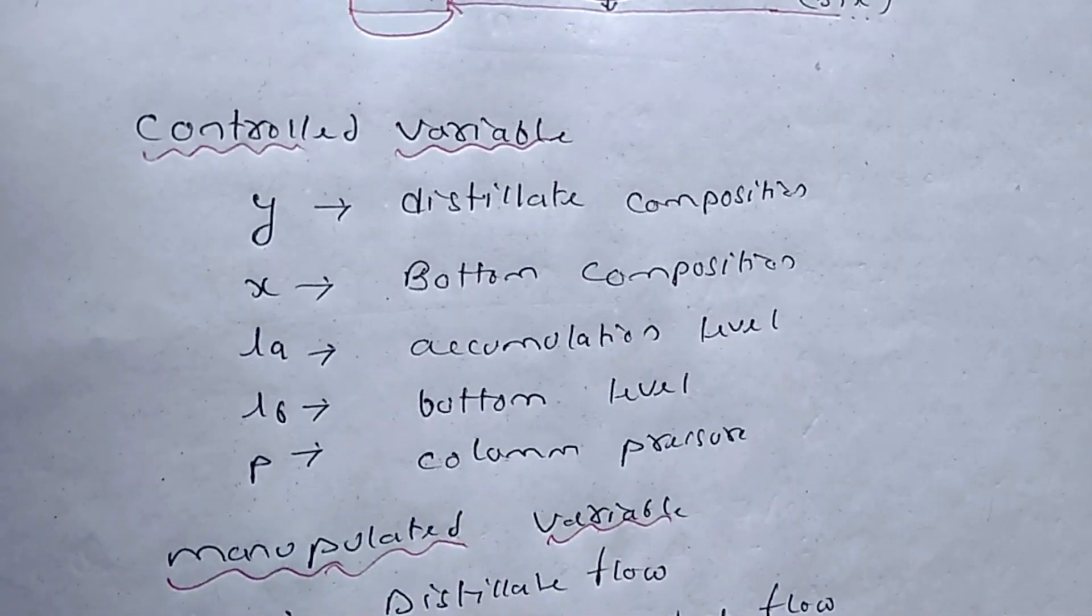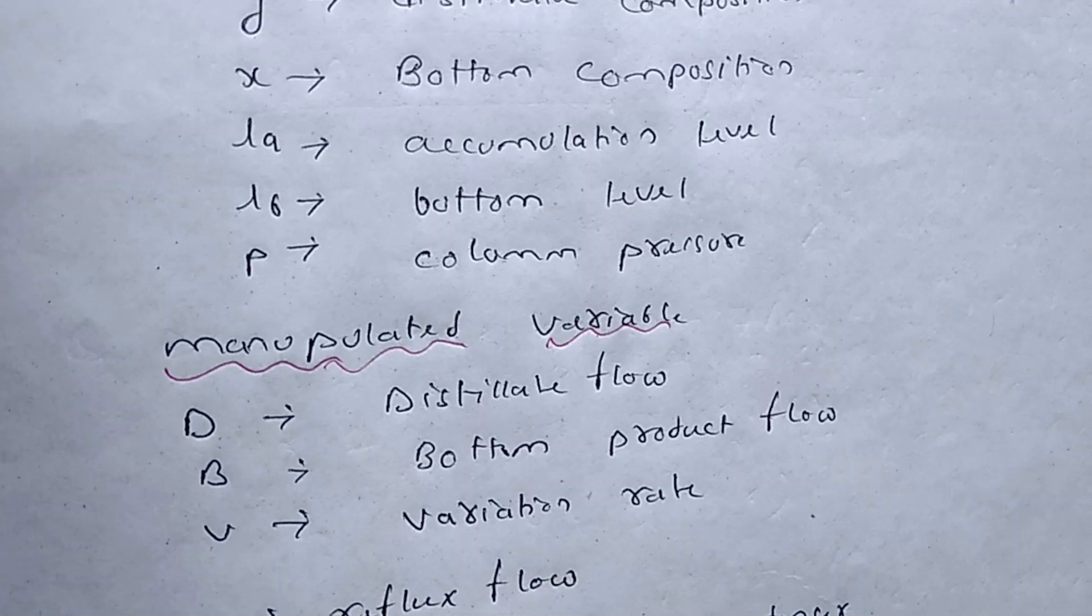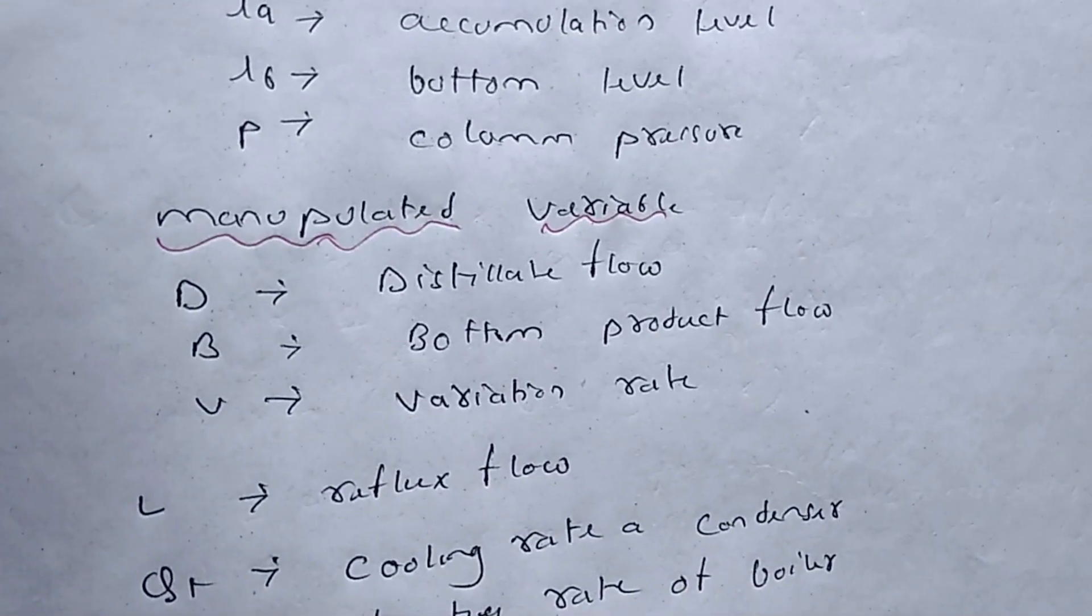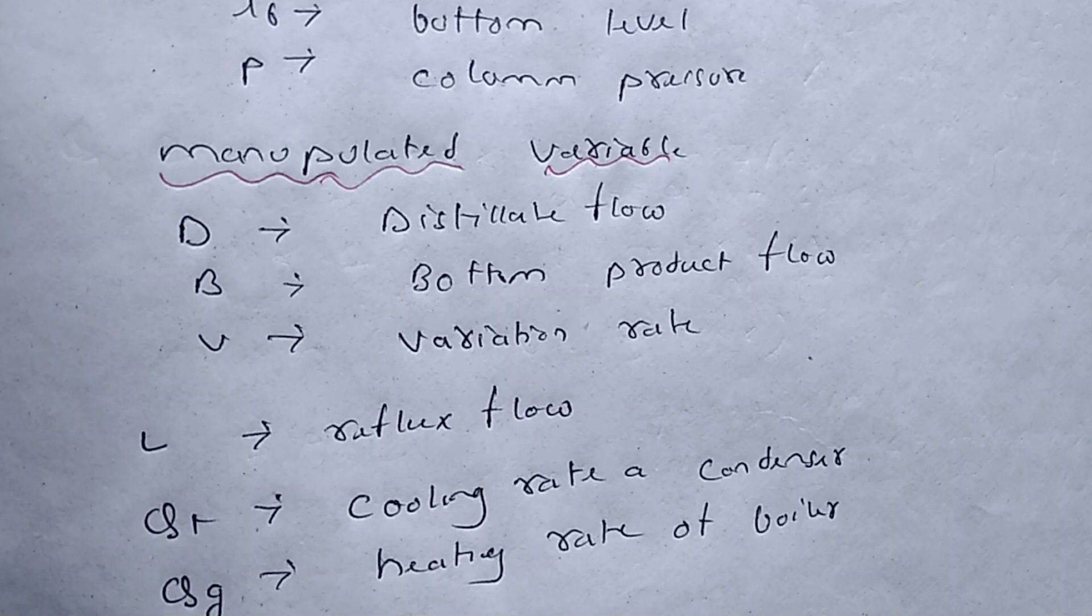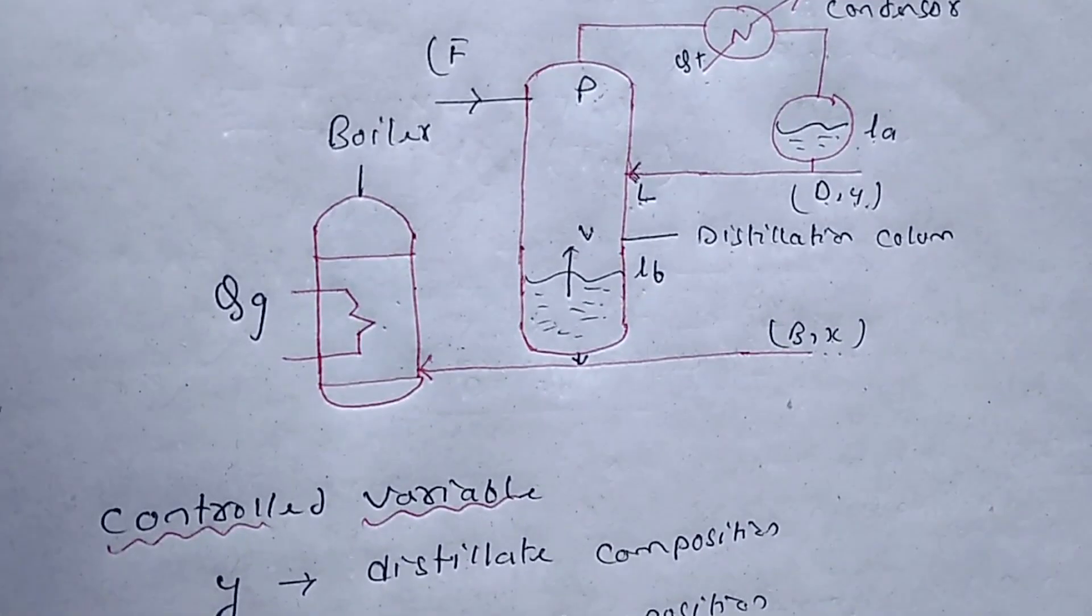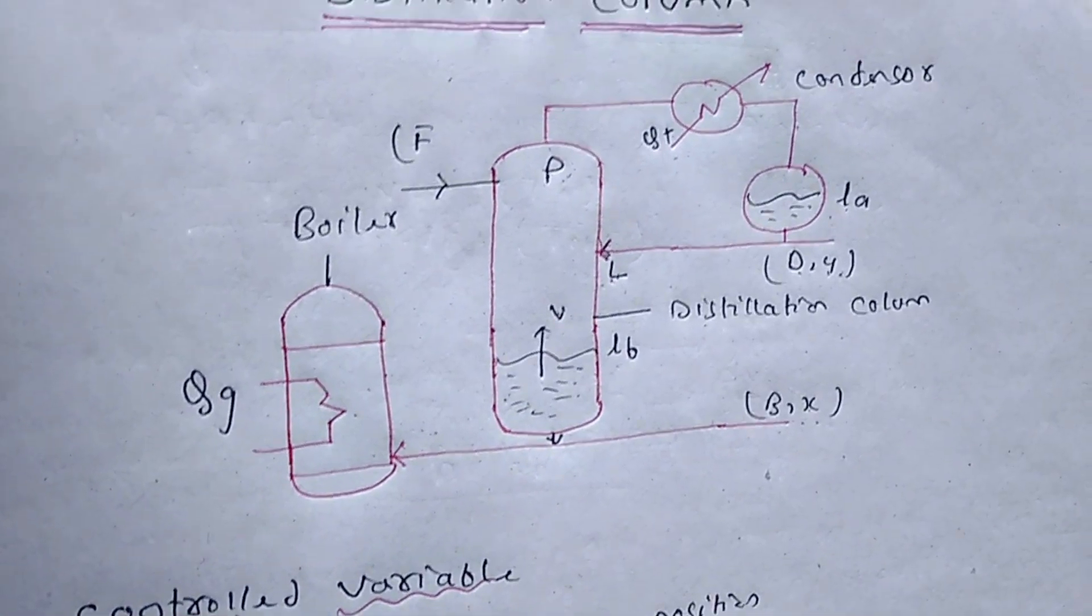You can write the control variables as well as the manipulated variables from here by watching the video. So this is the working of distillation column. I hope you will understand by easy way. Thanks for watching.